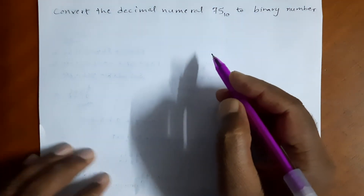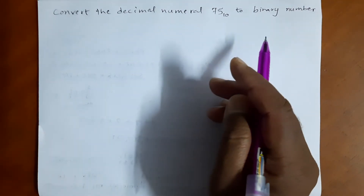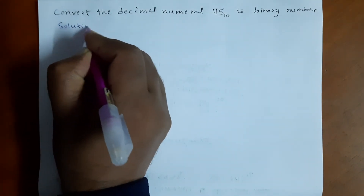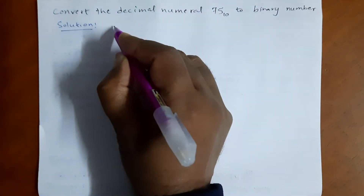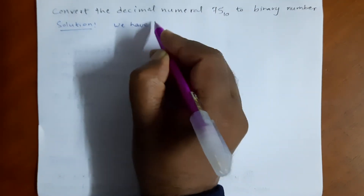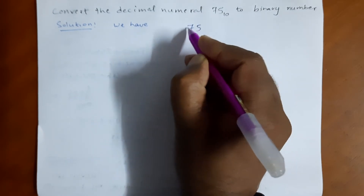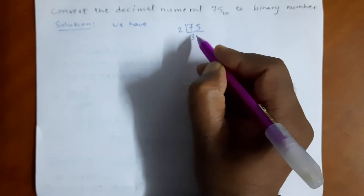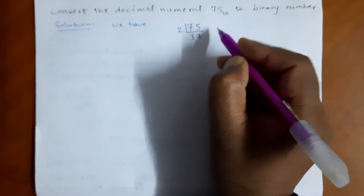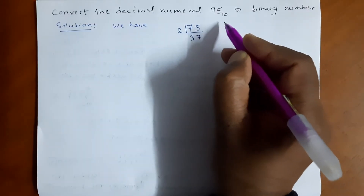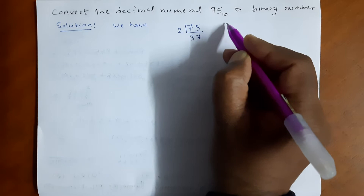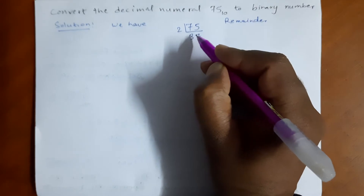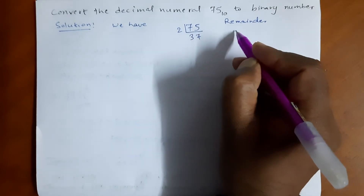So let's start dividing 75 by 2. We divide 75 by 2: 2 goes into 7 three times giving 6, remainder 1. Then we continue: 2 goes into 14 giving remainder 1. We write the remainder on one side.